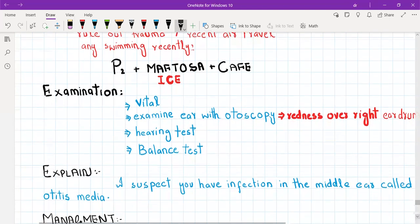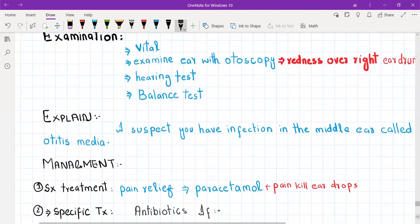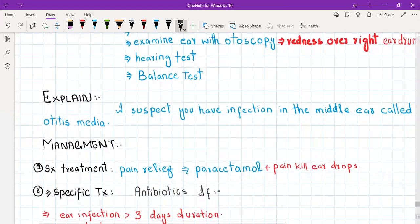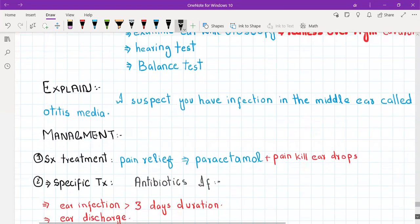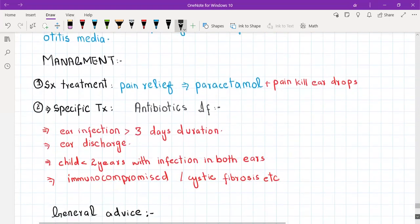Now how are you going to explain it to the patient? Simply, it's an infection of the middle ear. You will tell the patient that you suspect they have an infection in the middle part of their ear and this is called otitis media. Regarding management, there is no specific investigation needed. You can do routine blood tests that include CBC, LFTs, RFTs, urea and electrolytes.